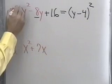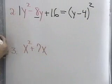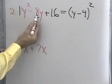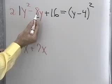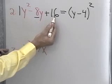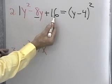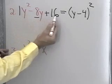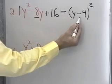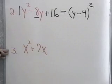So, first of all, I have to have a leading coefficient of 1. If that's the case, I go to the coefficient of the middle term and take half of it — in this case, that's 4. Square it, getting 16, and that gives me a perfect square trinomial, which I know will factor like this.